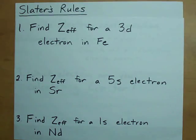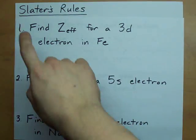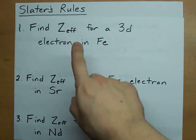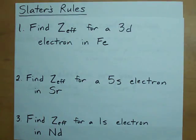Hey guys, I had a request to explain to you how Slater's rules work for figuring out the effective nuclear charge on an electron in an atom.